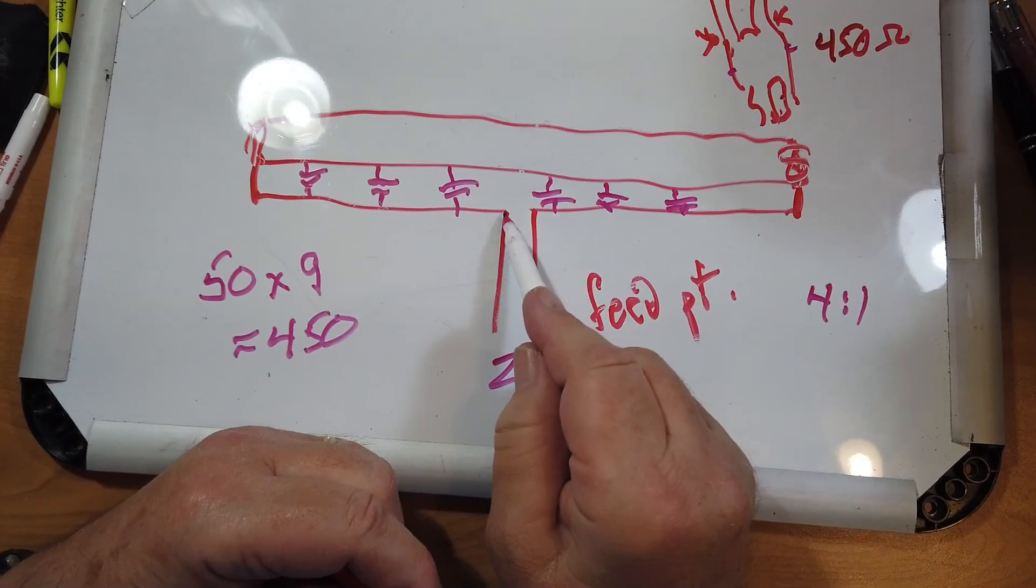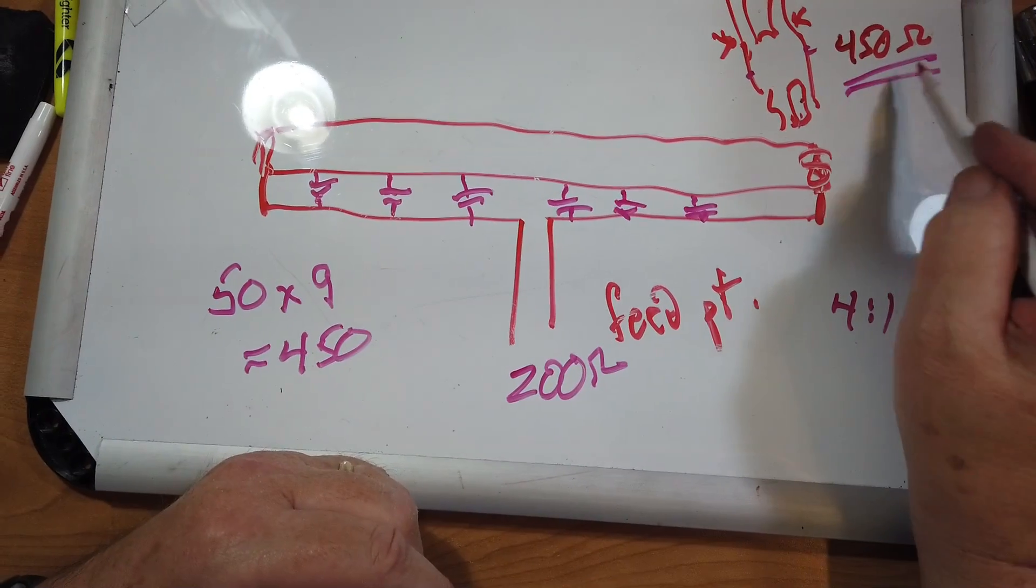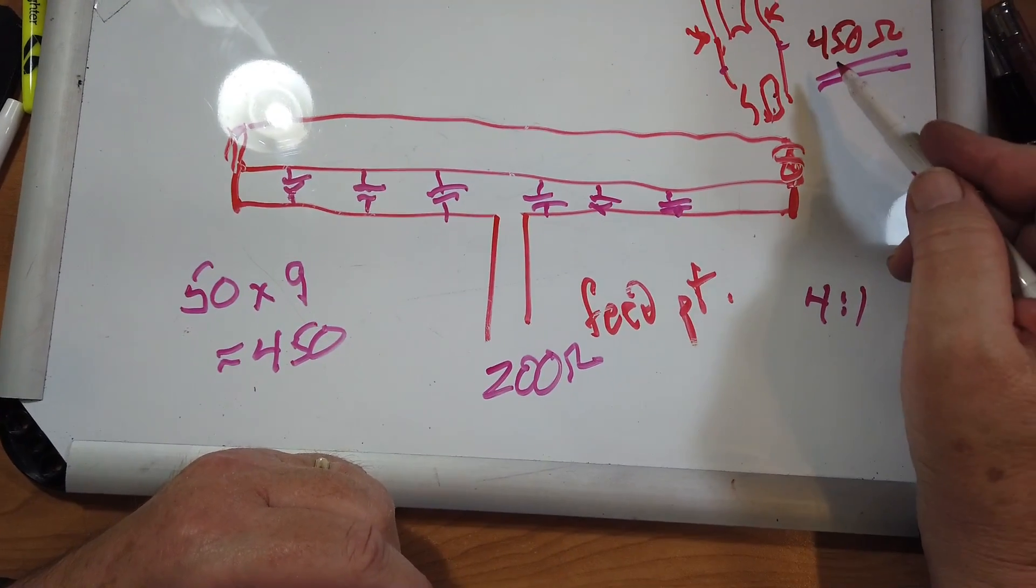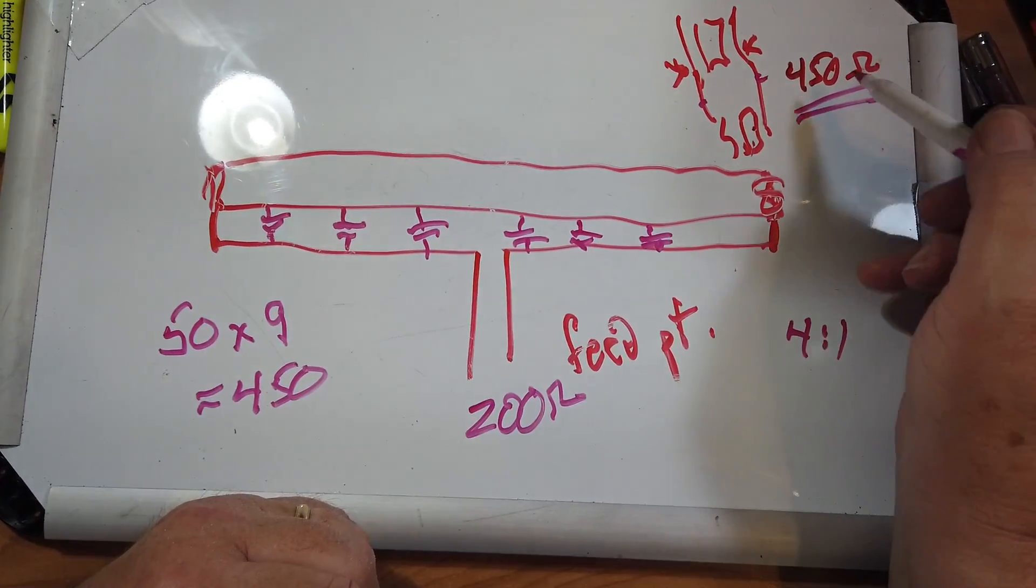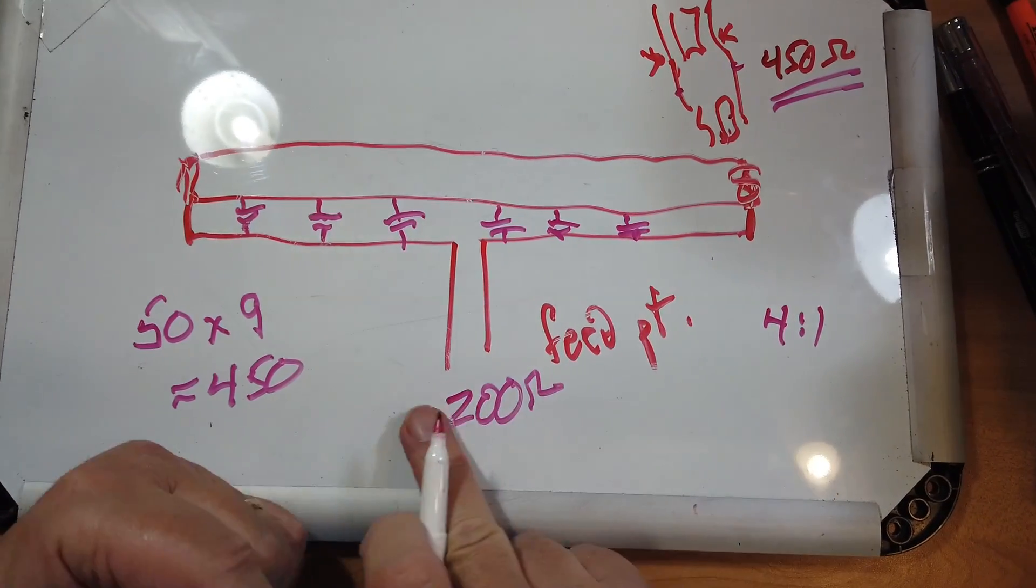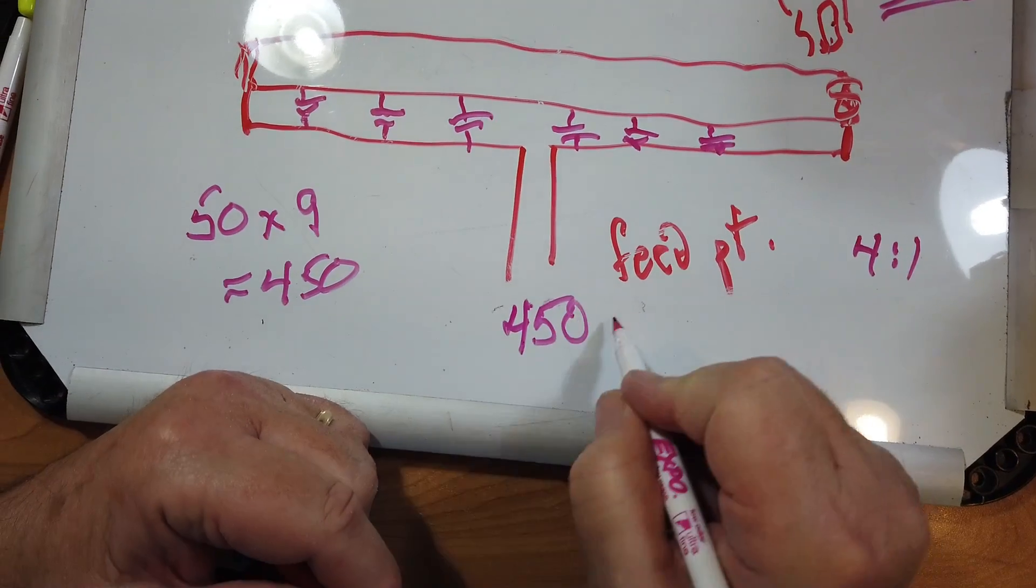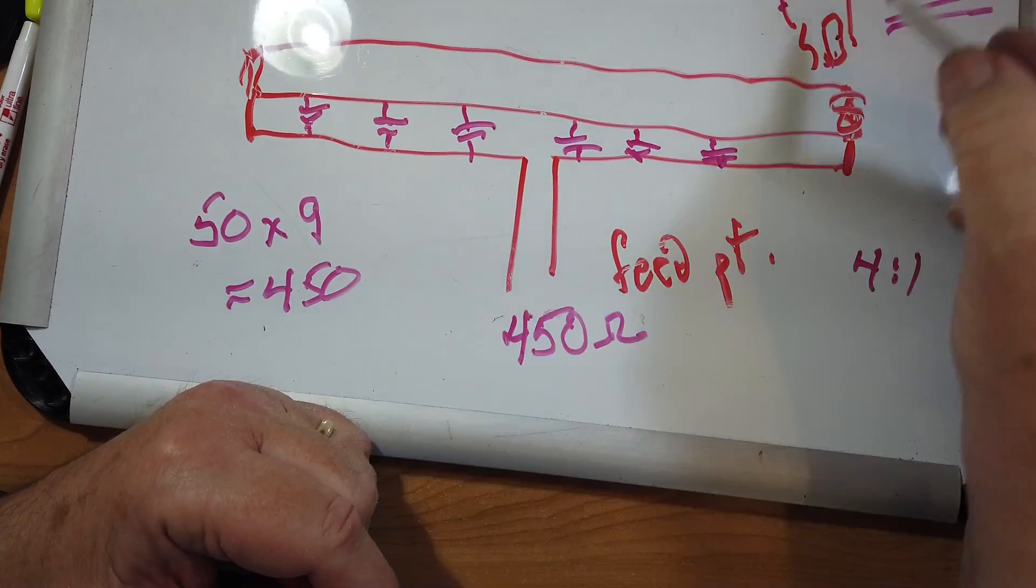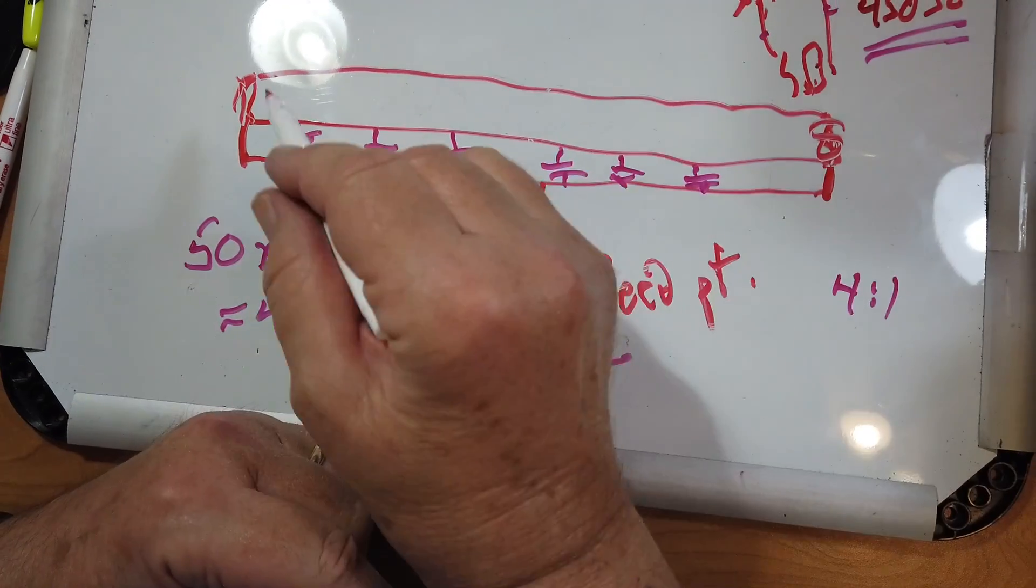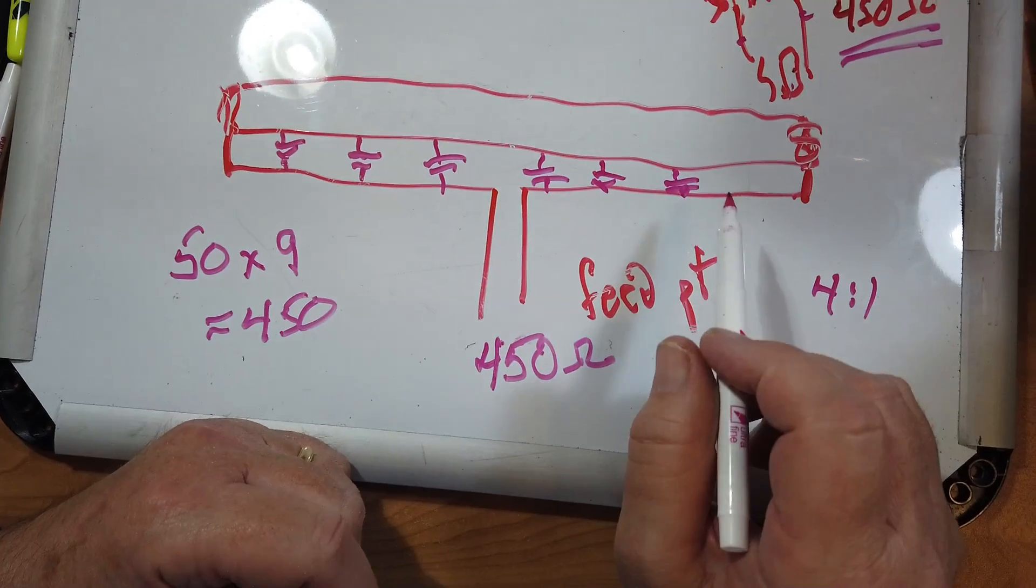So, if you were to feed this thing with 450 ohm ladder line, you would have this coming out not at 200 ohms, but at 450 ohms, which is exactly the impedance of this ladder line. So, you've got a wonderful impedance match right here.